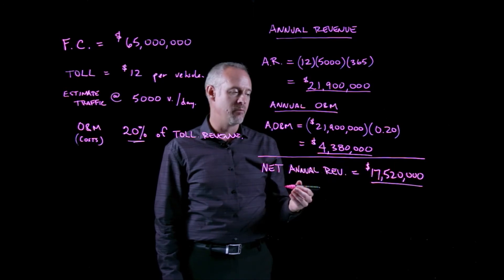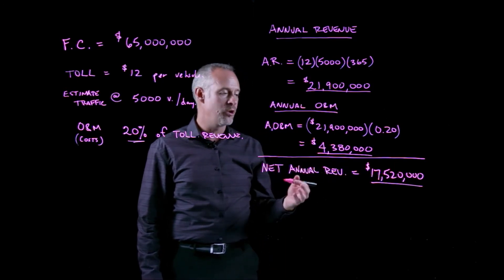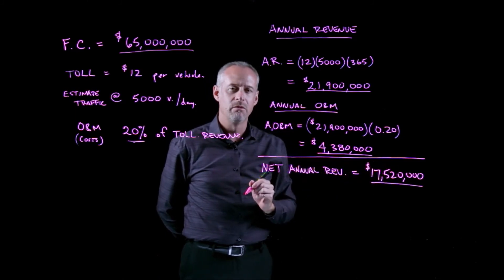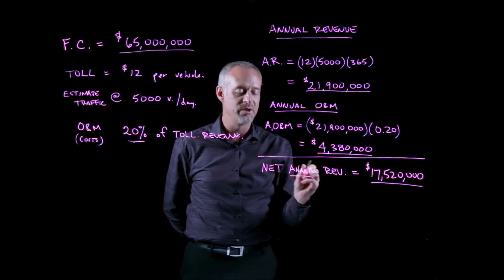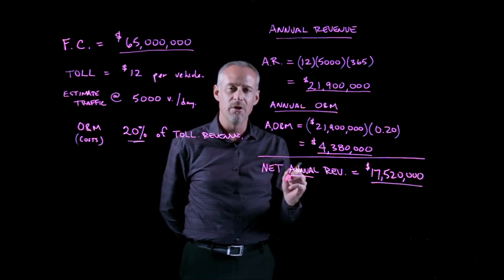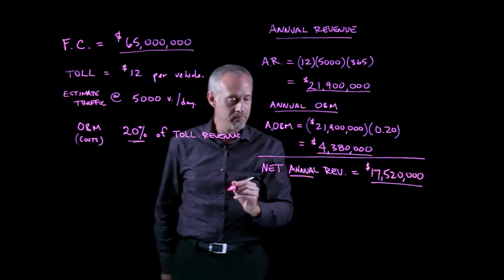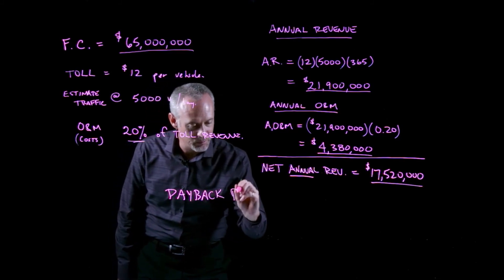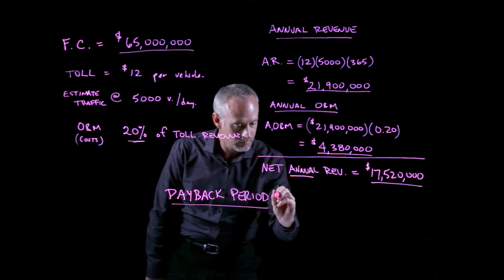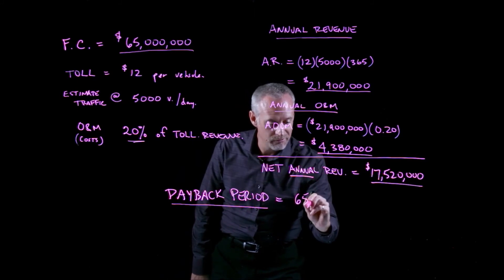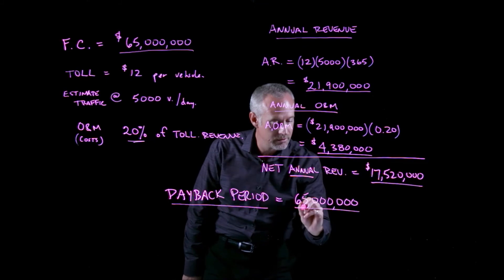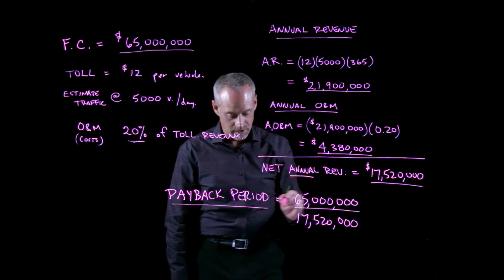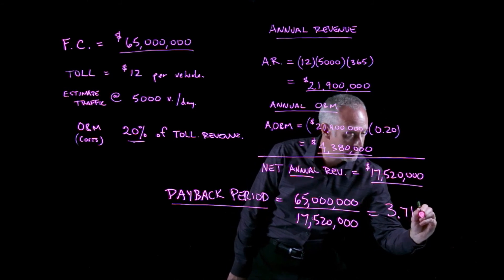Where the payback period method of analysis comes in is really all we're going to do is take our first cost and divide by the annual revenue to figure out how many years, remember this is annual revenue, so that would give us the number of years it would take for this bridge to pay for itself. So we just say, we'll call it the payback period, is going to be equal to $65,000,000 divided by $17,520,000. And that gives us 3.71 years.